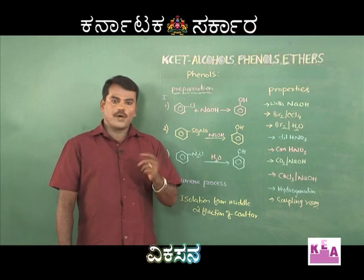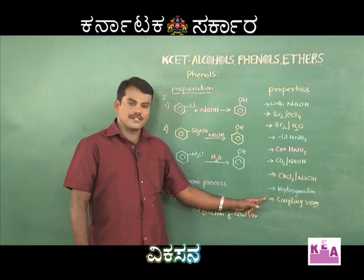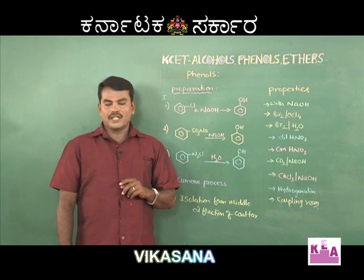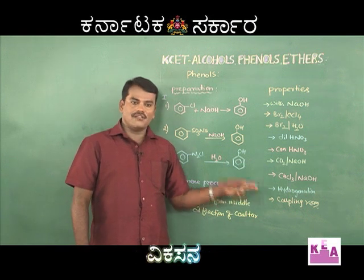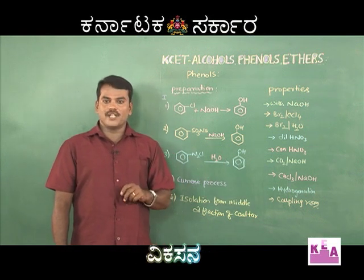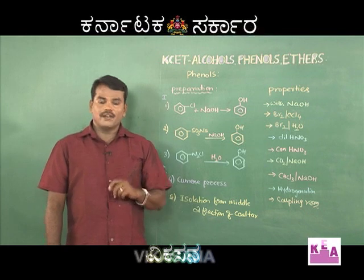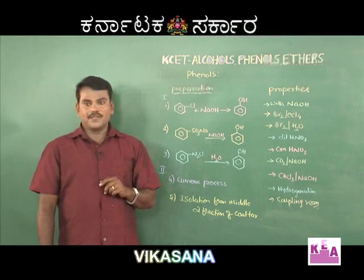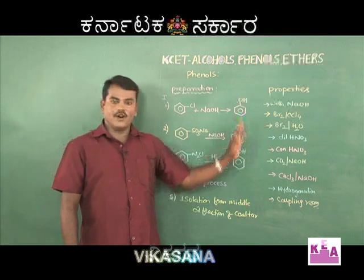Another important property of phenol is the coupling reaction. When phenol reacts with a diazonium salt such as benzene diazonium chloride, you get an azo dye which is orange-red in color. These are the important chemical properties of phenol.